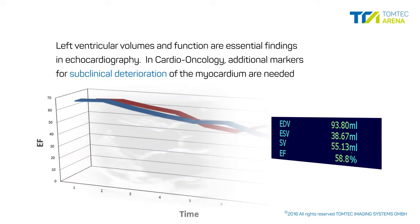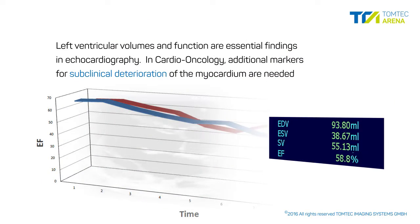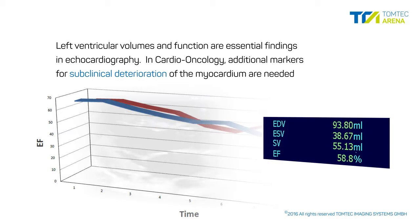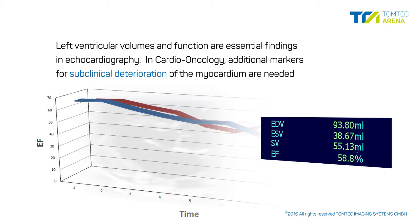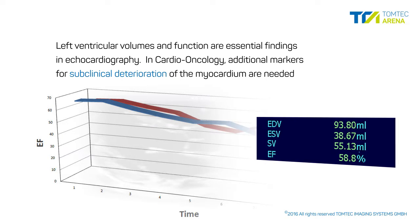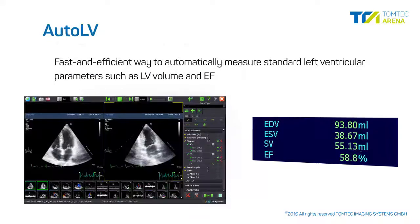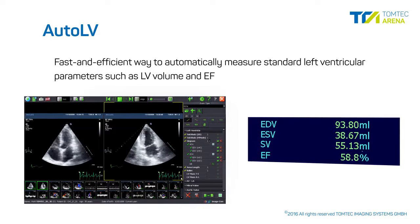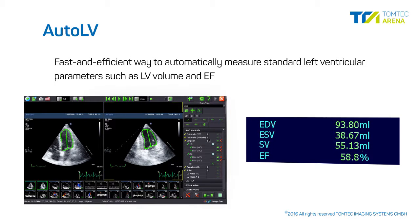Left ventricular volumes and function are essential findings in echocardiography. In cardio-oncology, additional markers for subclinical deterioration of the myocardium are needed. Auto-LV provides a fast and efficient way to automatically measure standard left ventricular parameters, such as LV volume and EF.